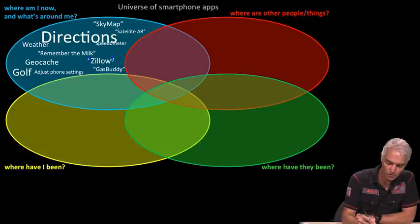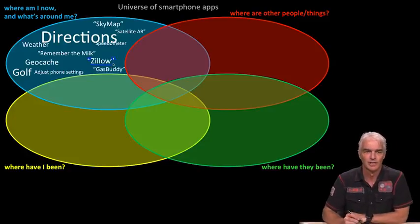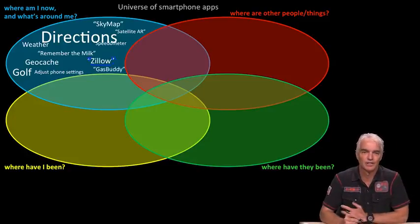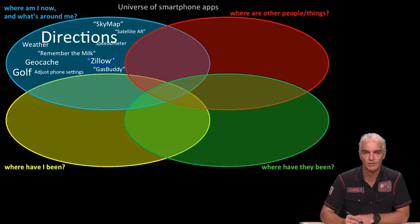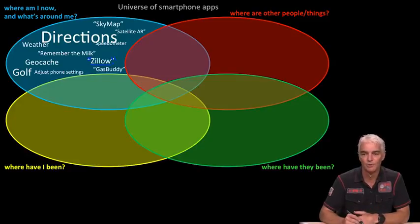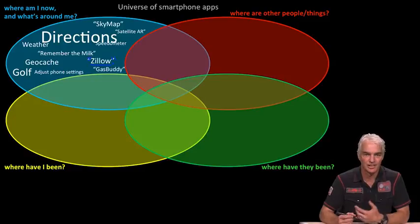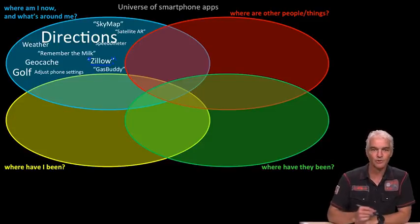Where there's a quote around an app name, it means that's the literal name of a particular app. Zillow, for example, is an application available in the US where, wherever you are, you can bring up Zillow and it'll show you the houses around you and the prices based on the most recent sale price. They adjust all the most recently known prices for an area — a really interesting economic blend of GPS and publicly available information.